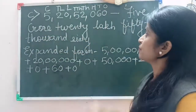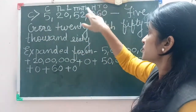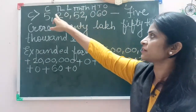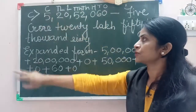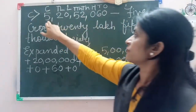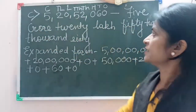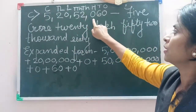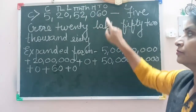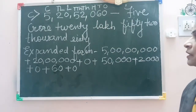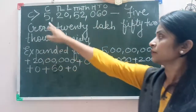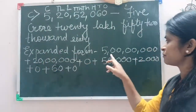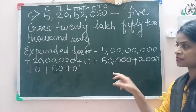See the solution for C1. This is the 8-digit number where we place the numbers on the place value chart: 1s, 10s, 100s, 1,000, 10,000, lakh, 10 lakh, crore. Now we will read it: 5 crore, 20,000, 52,000, 60.